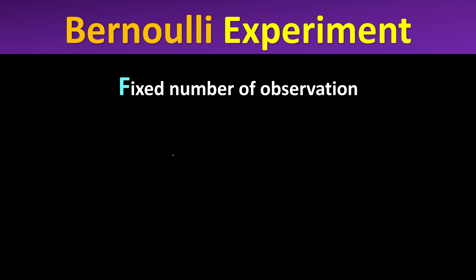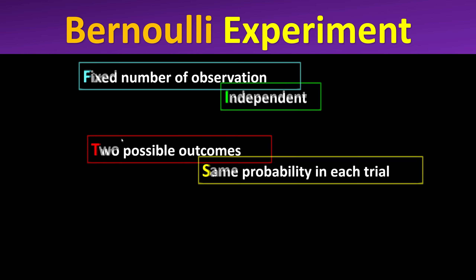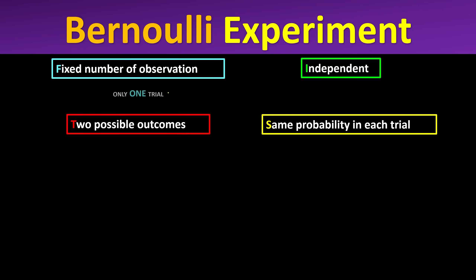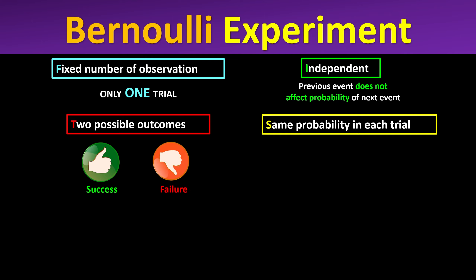Let us define the Bernoulli experiment more formally. To know whether an event is a Bernoulli experiment, we check whether it fulfills FITS. FITS means: the experiment must have only one observation — one trial. Each event must be independent, meaning the previous event does not affect the probability for the next. And the experiment has only two possible outcomes — for example, getting a six is success, and any other result is failure. Since there is only one trial, the maximum number of successes is one or zero.